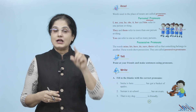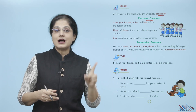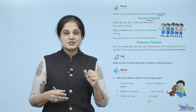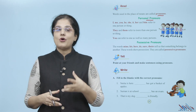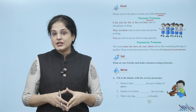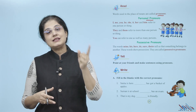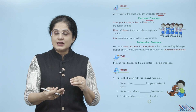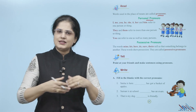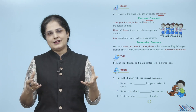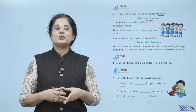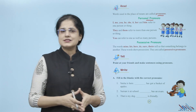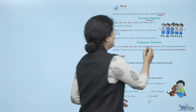They and them refer to more than one person or thing. Agar ek se zyada insaan ya cheezein hain toh kaunse pronouns use karte hain — hain they aur them. You can refer to one as well as many persons. Saamne wala insaan chaahe ek ho ya ek se zyada, dono cases mein hum pronoun use karte hain — wo hai 'you'.